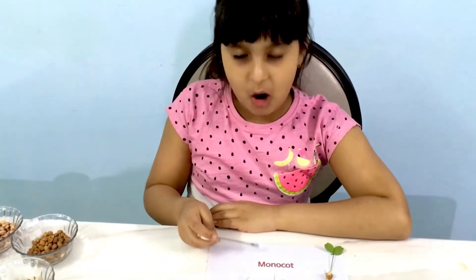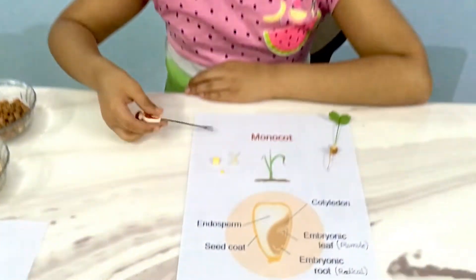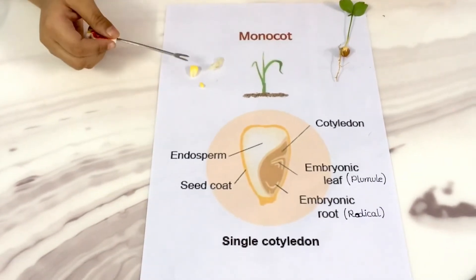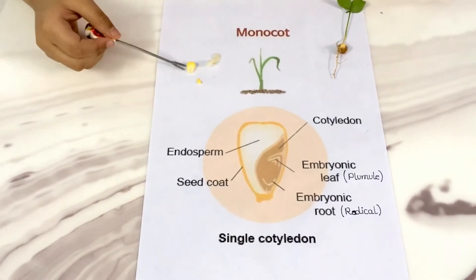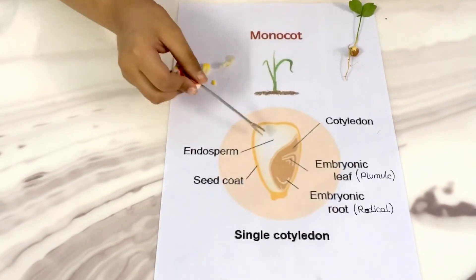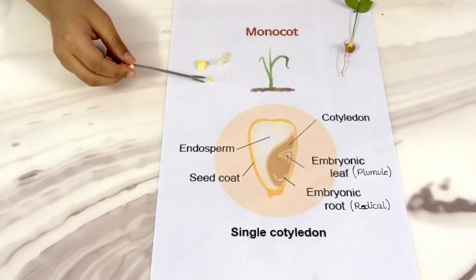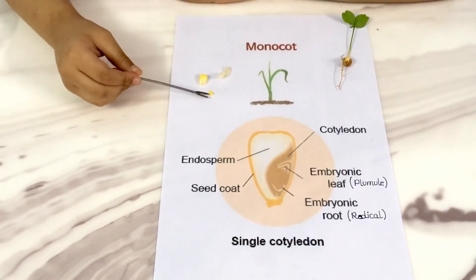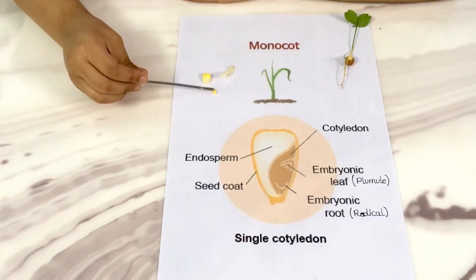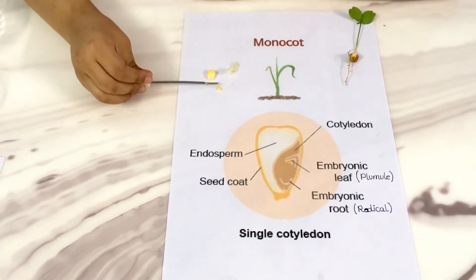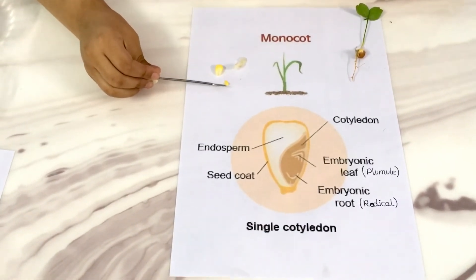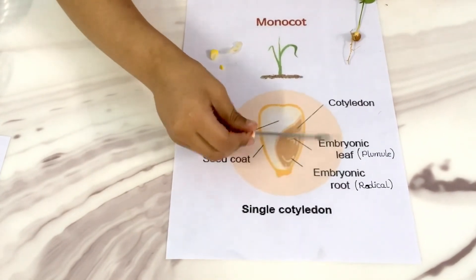Now coming to the monocot, I will take the example of the maize or corn seed. If I remove the testa or the seed coat, we will see these two structures. This bigger one is known as the endosperm, shown in the figure. This is known as the cotyledon which contains the embryo in it. The upper part of the embryo develops into the plumule and the lower part of the embryo develops into the radicle, as shown in the figure.